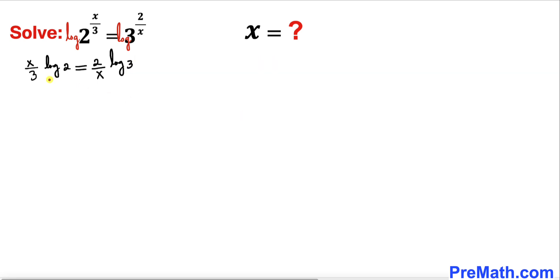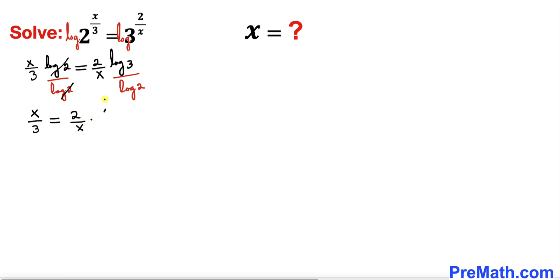Now let's divide both sides by log of 2. The log of 2 cancels out, and we are left with x divided by 3 equals to 2 divided by x times log of 3 divided by log of 2.